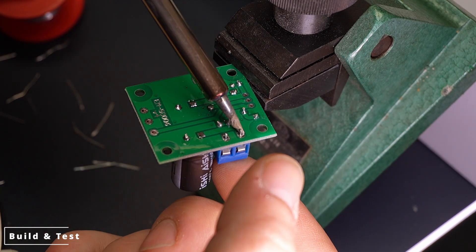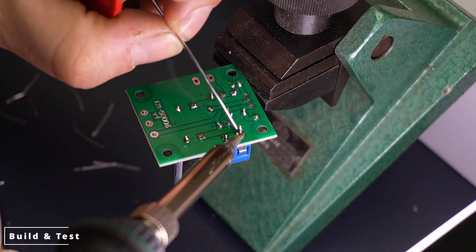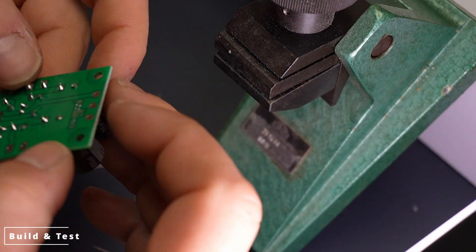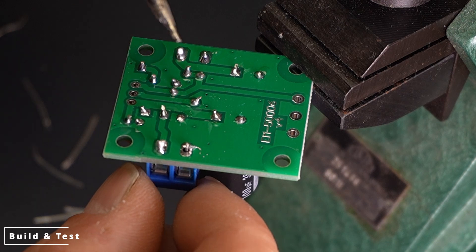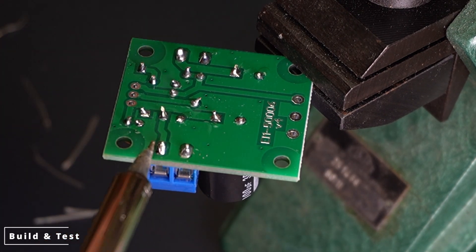Soldering connectors and output terminals. Finally, we'll solder the larger connectors and output terminals. These require a bit more solder, but the technique remains the same. Create a clean, strong bond.